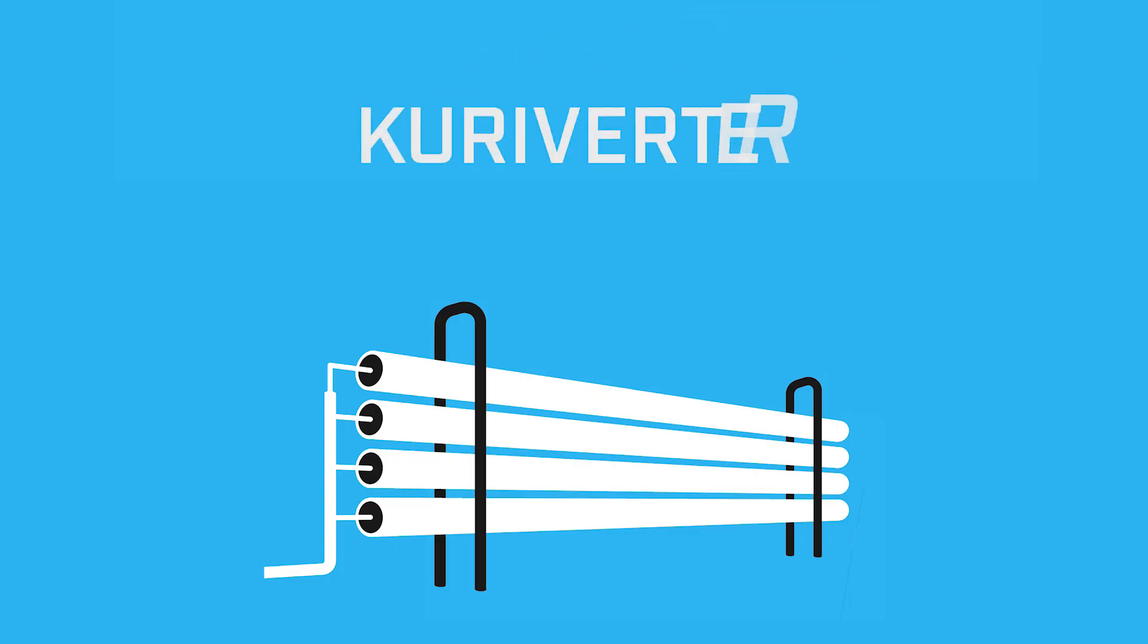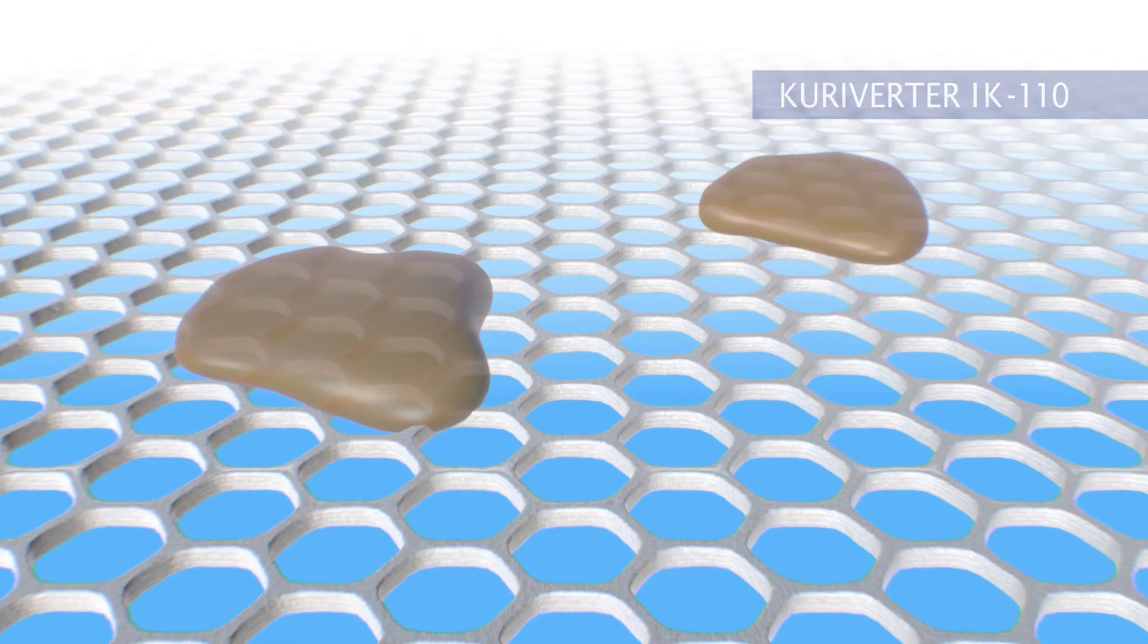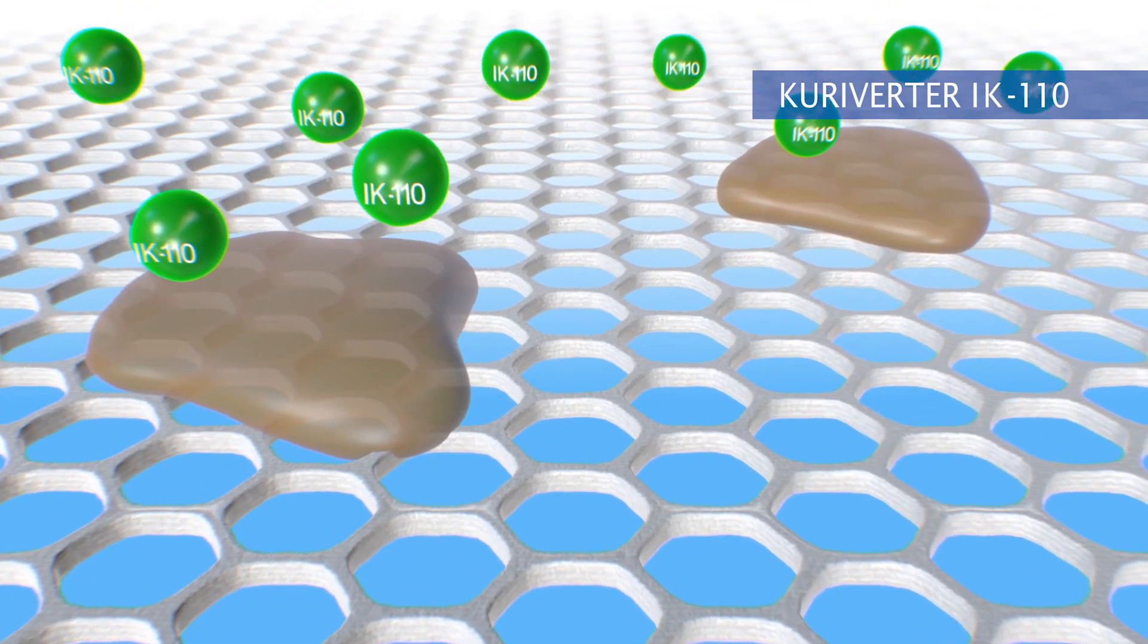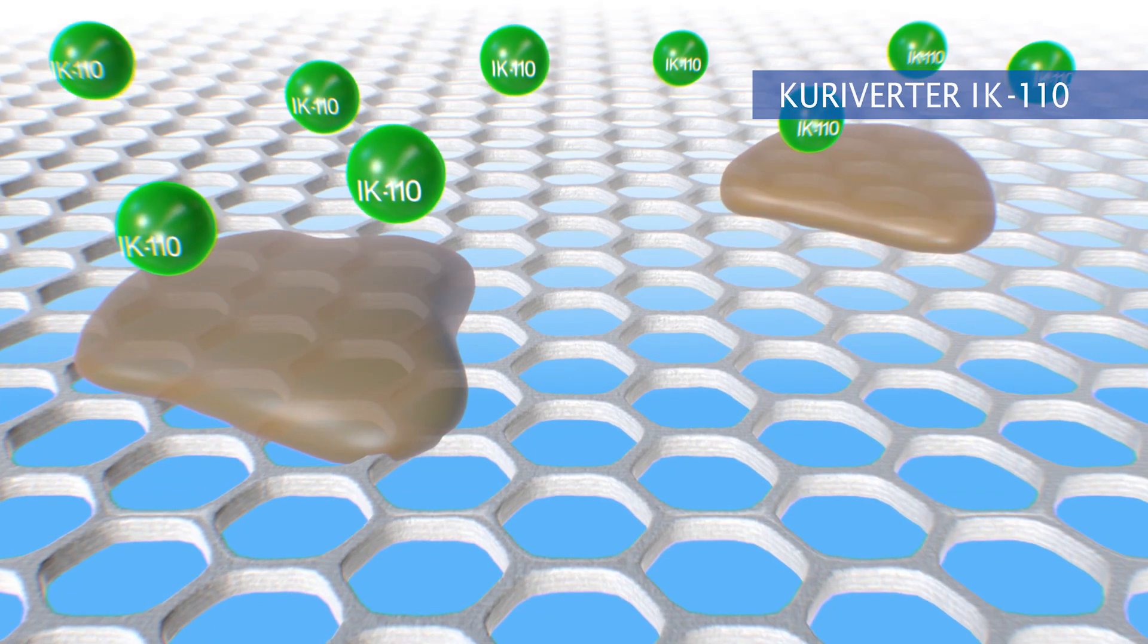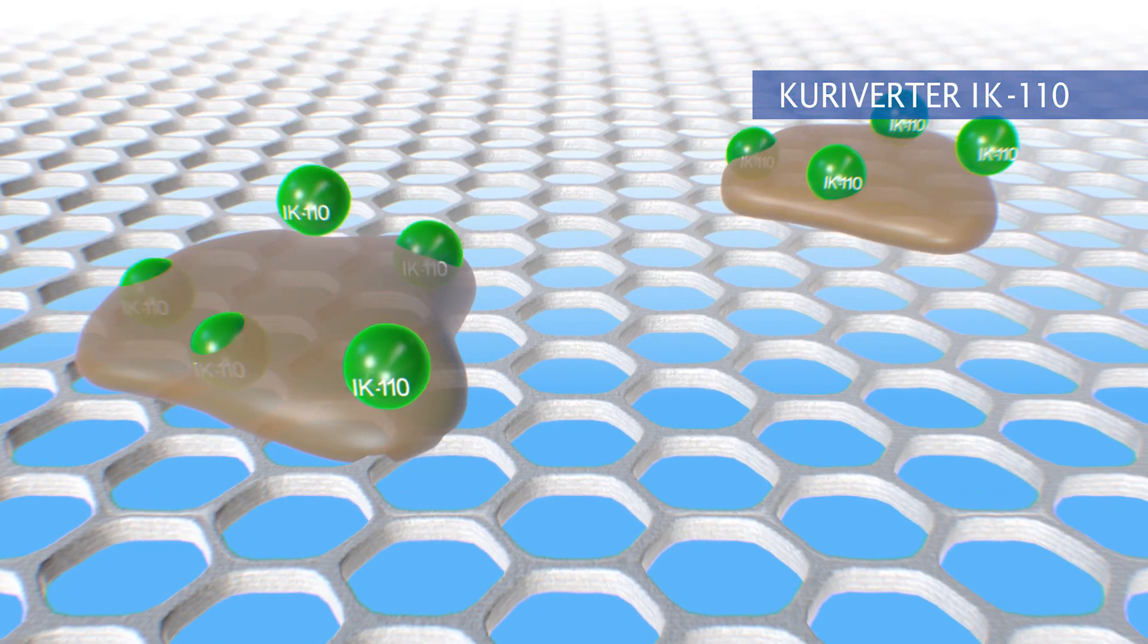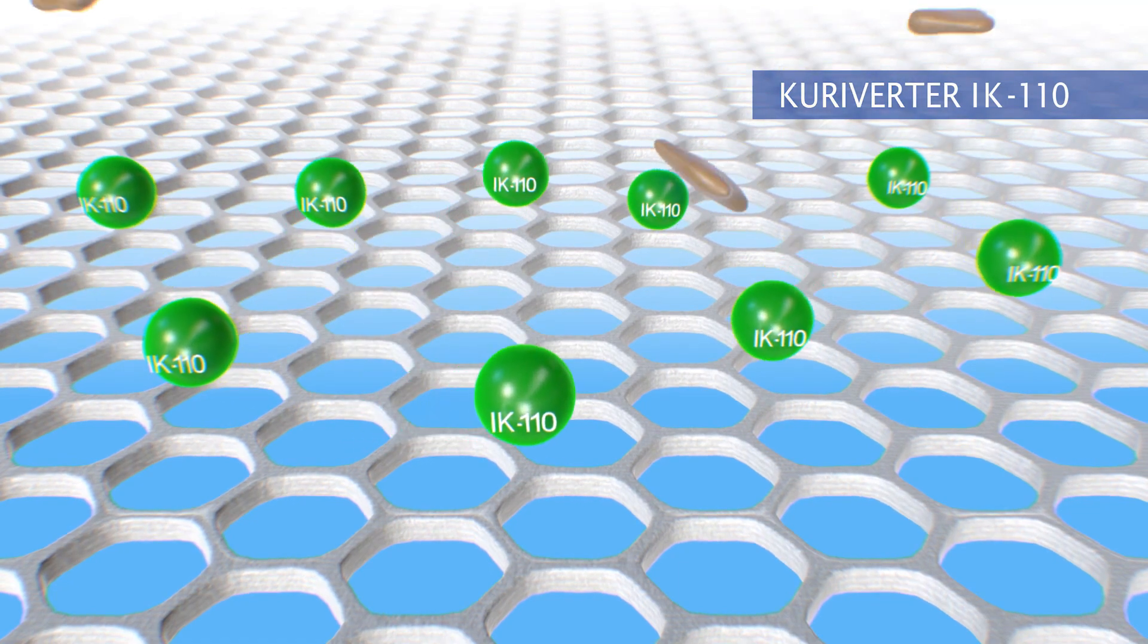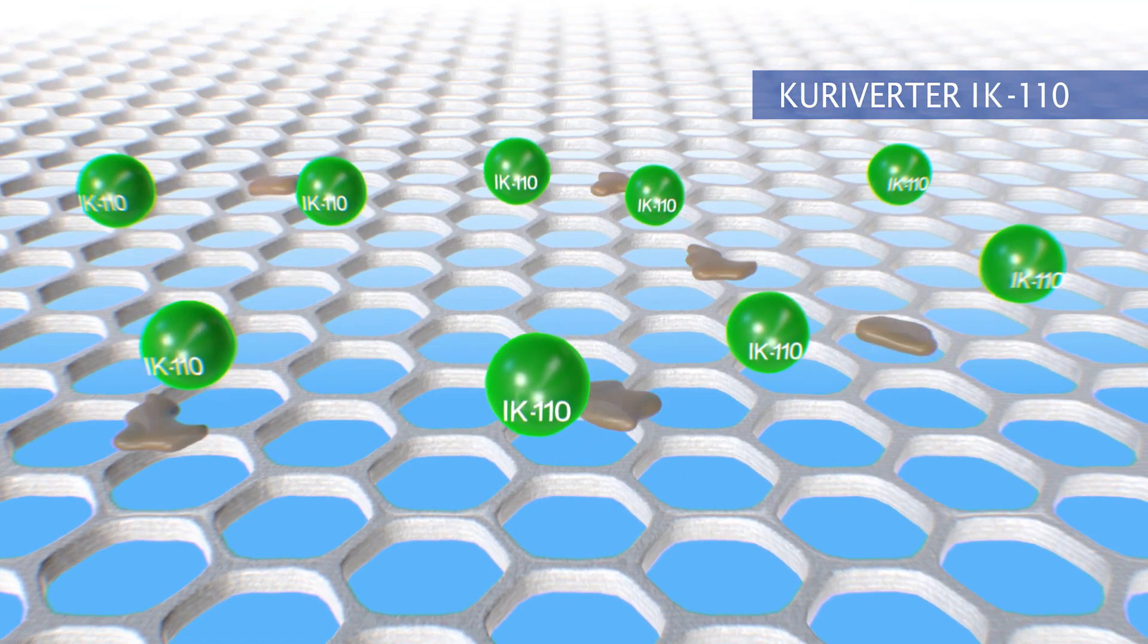The innovative Kuriverter IK110 was developed to prevent the growth of biofouling on the membrane. The Kuriverter IK110 is an unprecedented and innovative biofouling control agent. Dosing it removes the biofouling on the membrane and prevents its growth.